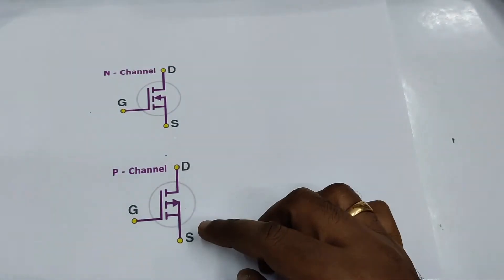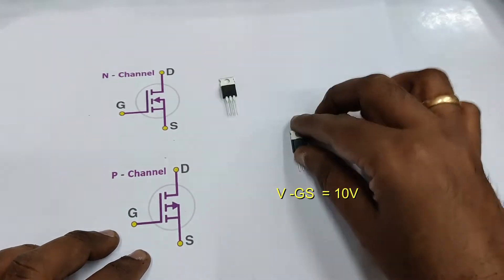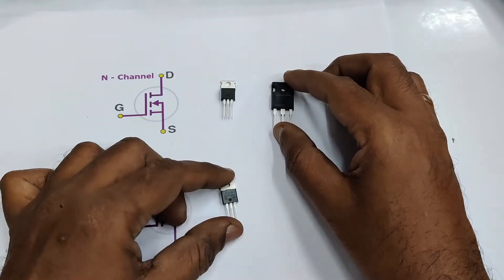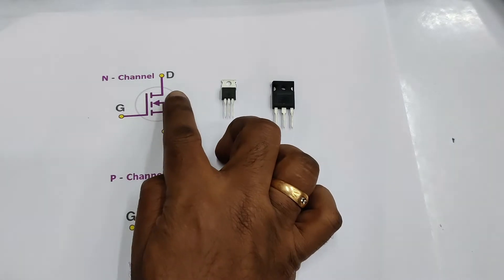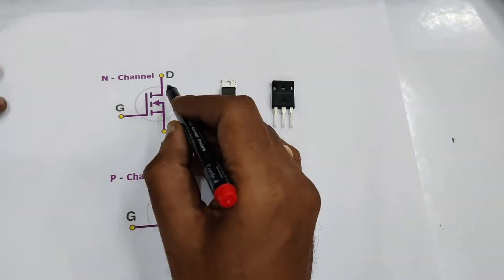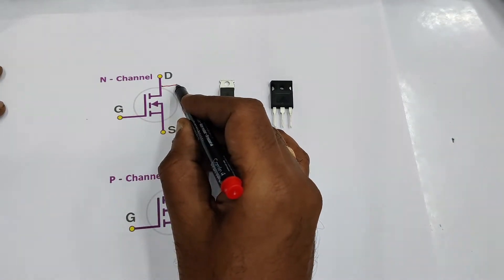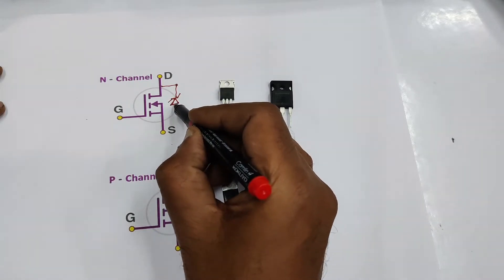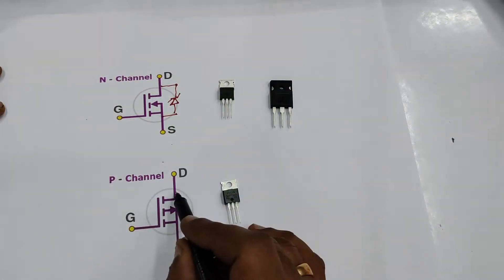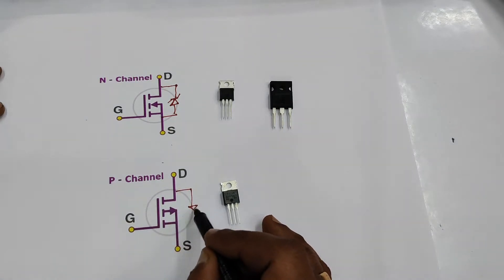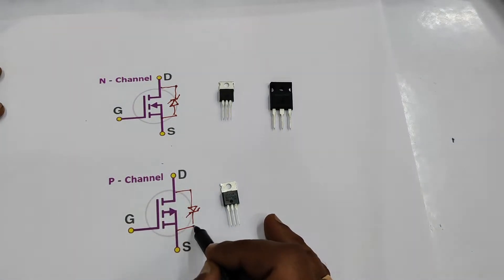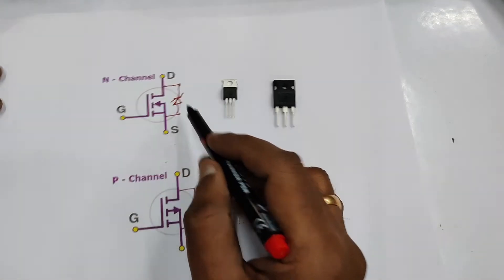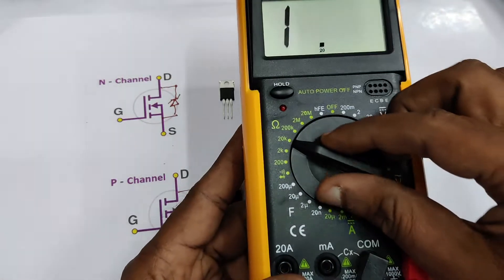All these MOSFETs have a VGS — gate to source voltage — of 10V maximum, so up to 10V can be applied to the gate. Now let us see how to test the MOSFET. Most enhancement MOSFETs have an internal diode. In the N-channel, the internal diode anode is at the source, and in the P-channel, the anode is at the drain.